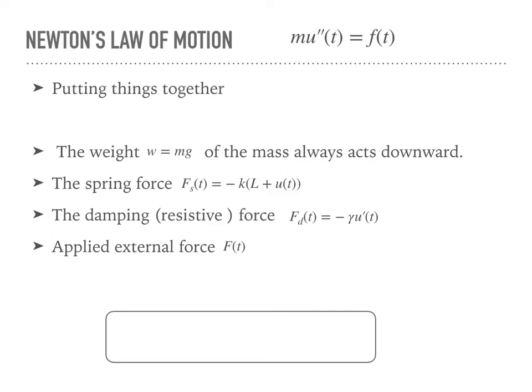We use Newton's law of motion to model the spring-mass system. Newton's law states that the mass m multiplied by the acceleration equals all the forces acting on the mass. Putting everything together, we have four forces actively acting on the mass at any time, and we combine them all to get the function f(t).